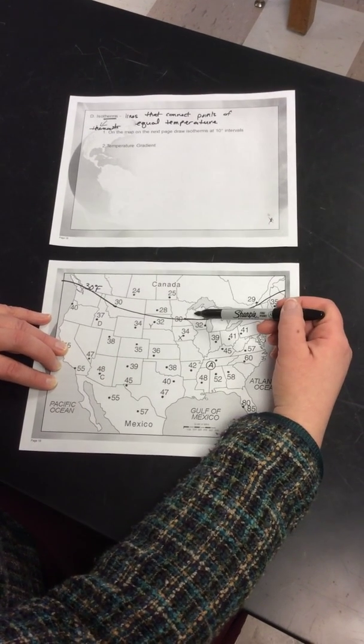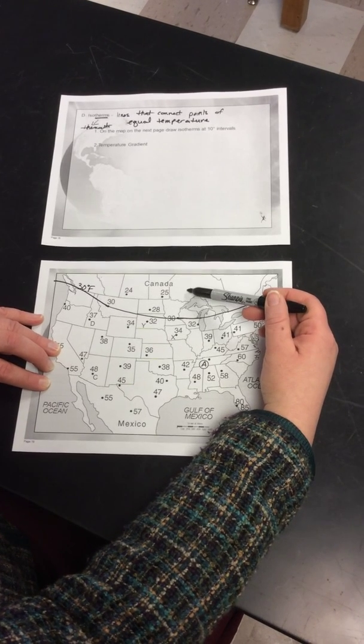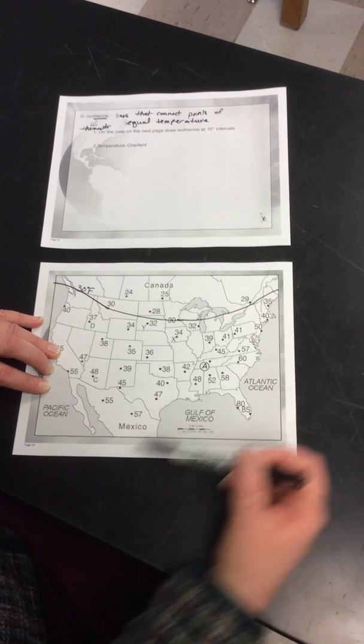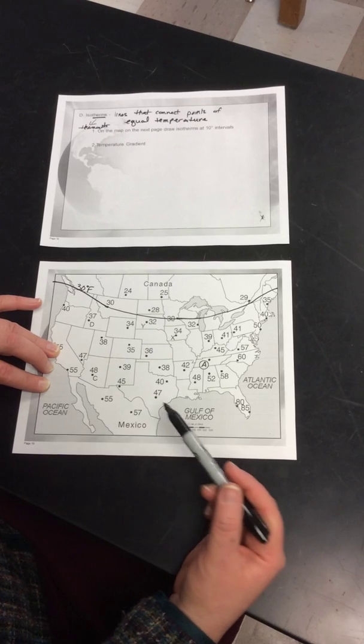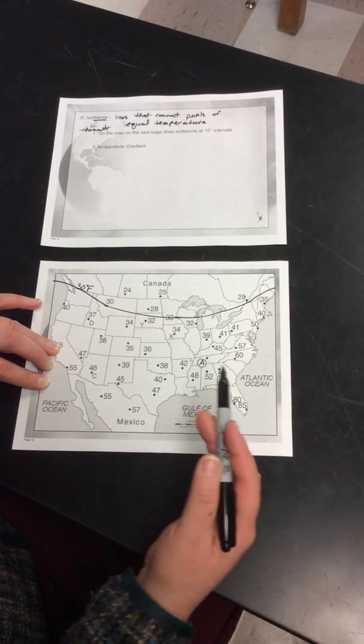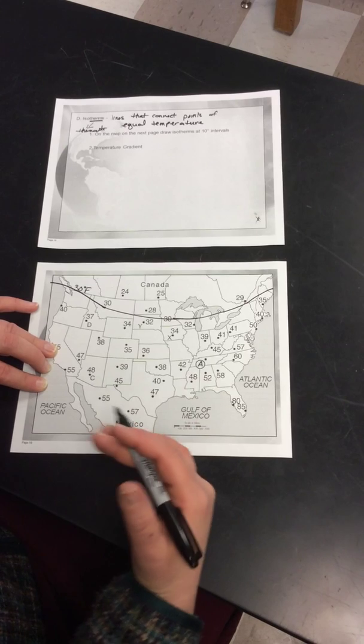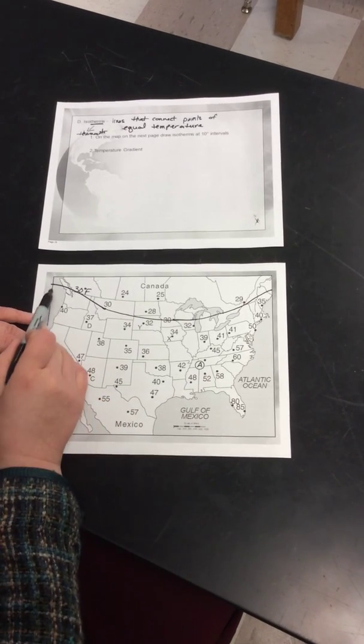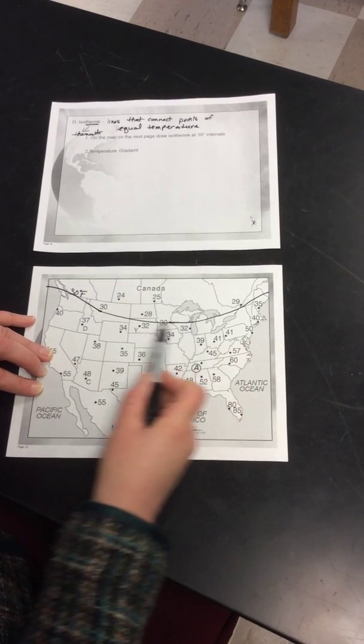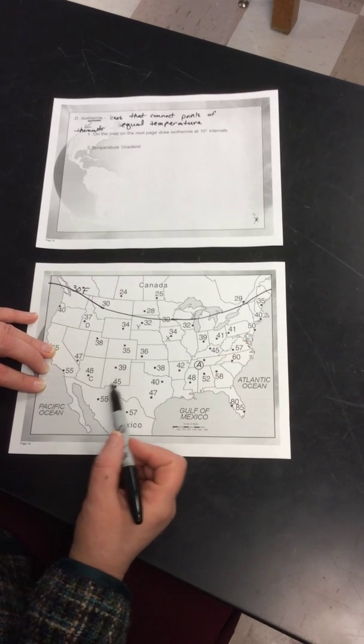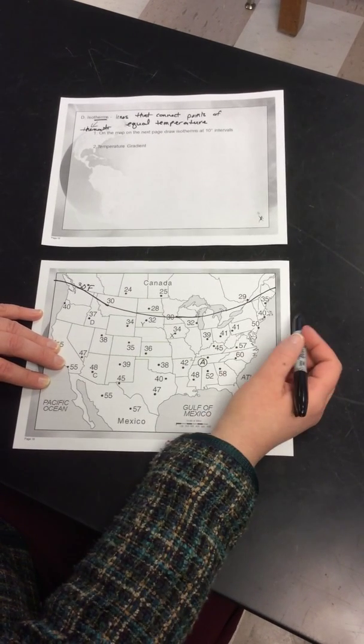We've essentially separated all of the temperatures that are colder than 30 from all of those that are higher than 30. That's the concept - we're connecting those points that are the same, separating the higher temperatures from the lower temperatures. Once this pattern is established, we should be looking for that same pattern as we draw the rest of these isotherms.